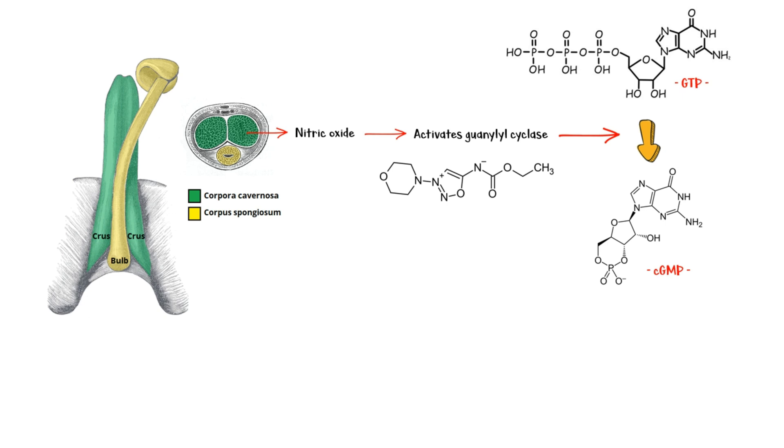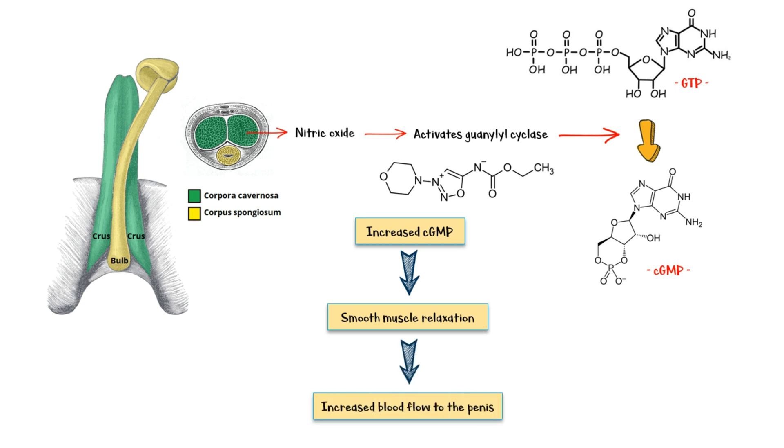This triggers a cGMP-dependent cascade of events. The accumulation of cGMP leads to smooth muscle relaxation in the corpus cavernosum and increased blood flow to the penis, causing an erection.